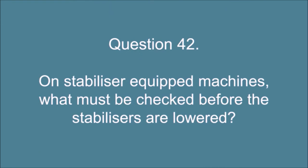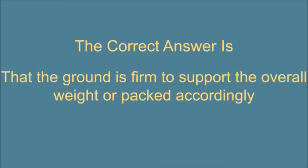Question 42. On stabilizer equipped machines, what must be checked before the stabilizers are lowered? The correct answer is: That the ground is firm to support the overall weight or packed accordingly.